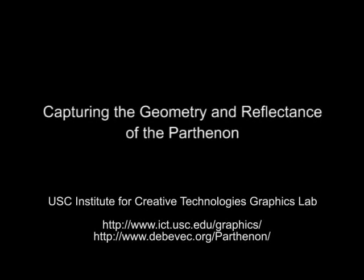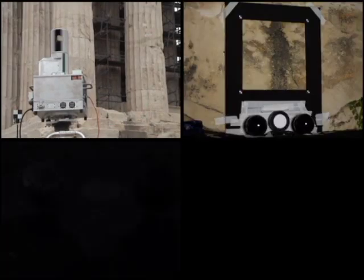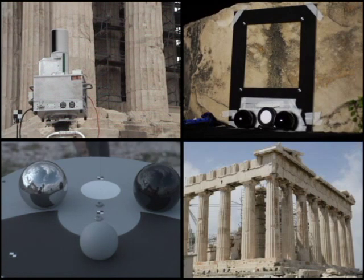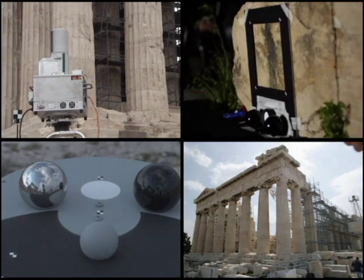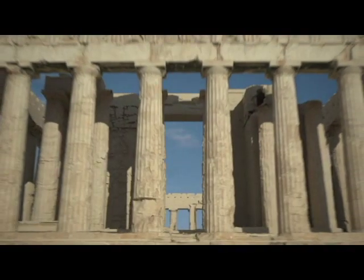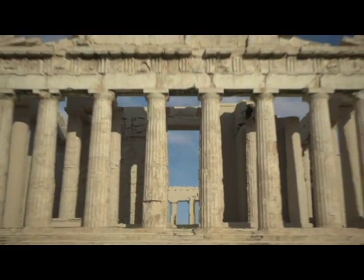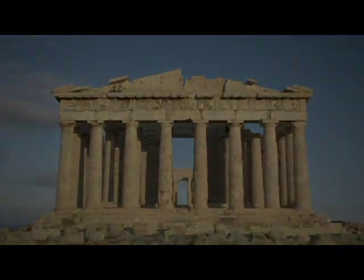In this video, we present a process that uses 3D scanning, BRDF measurement, incident illumination capture, and digital photography for capturing spatially varying reflectance properties of real-world scenes observed under natural illumination. The result is a texture-mapped three-dimensional model that can be visualized for novel viewing and lighting conditions.